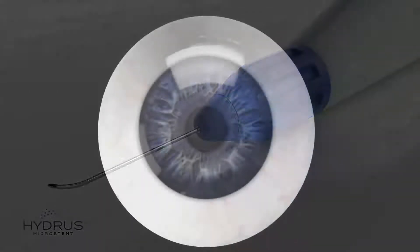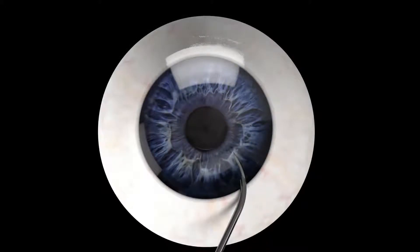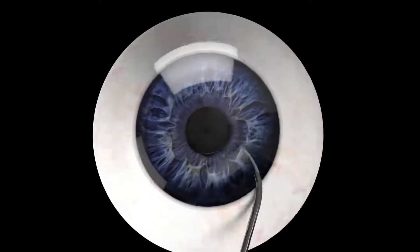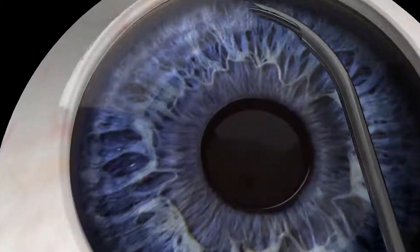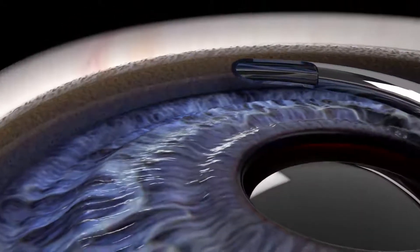The Hydrus cannula is inserted through a corneal incision at the temporal position and directed towards the trabecular meshwork, where it is positioned parallel to Schlem's canal.